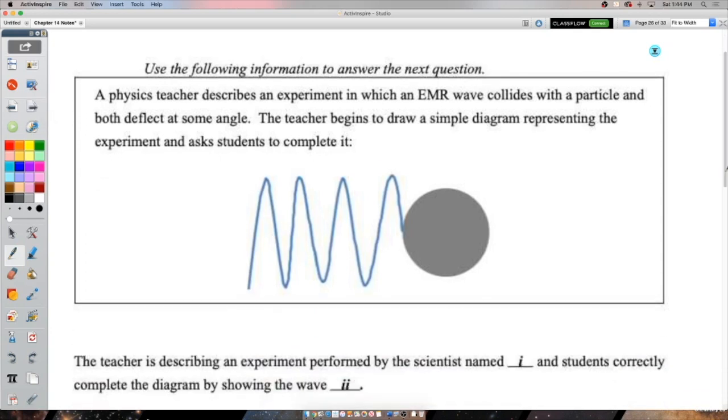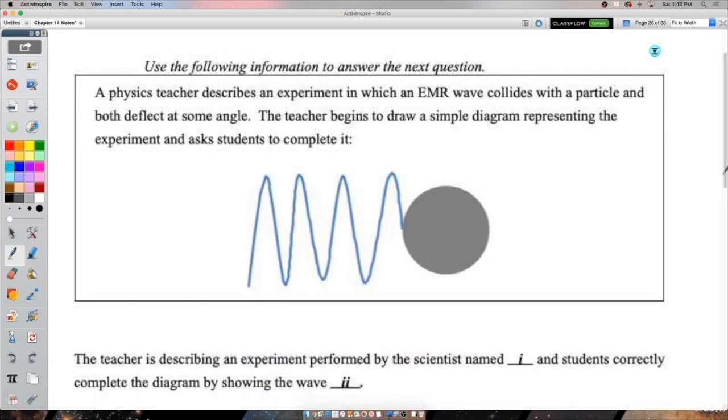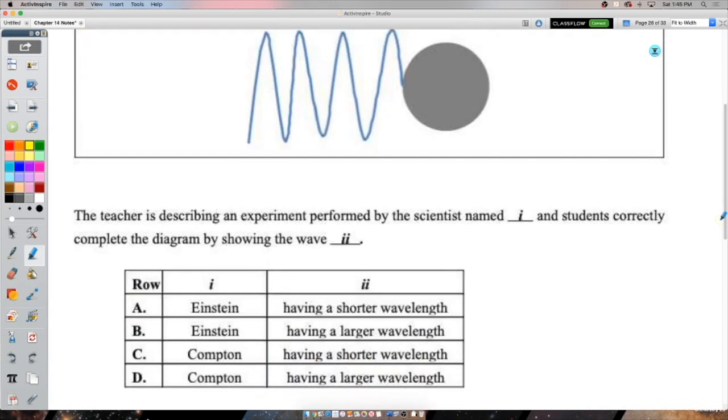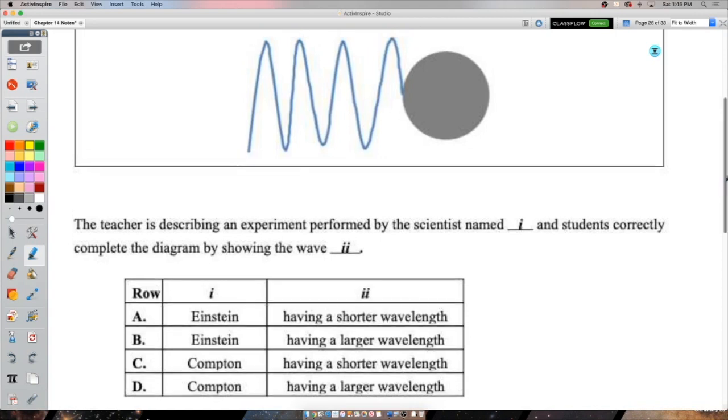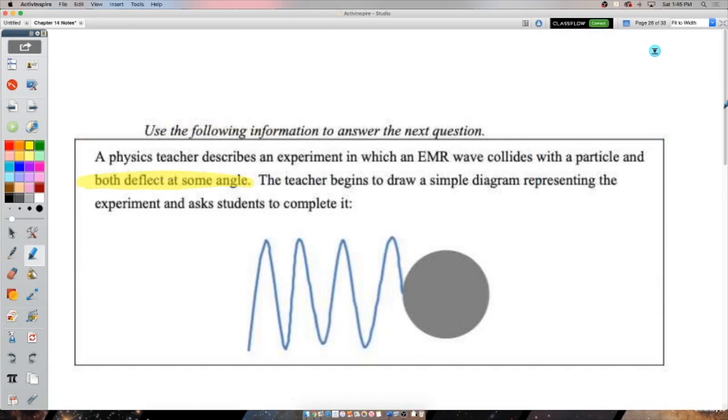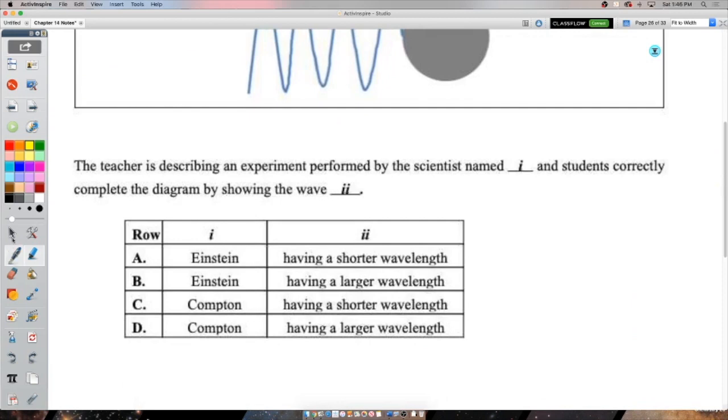A physics teacher describes an experiment in which an electromagnetic radiation wave collides with a particle and both deflect at some angle. Both deflect at some angle. The teacher begins to draw a simple diagram representing the experiment and asks students to complete it. This is the start of a diagram. We can see there, the wave has come in and it has made contact with the particle. So first things first, the teacher is describing an experiment performed by the scientist named blank. So either Einstein or Compton. So Einstein, photoelectric effect. Compton, Compton scattering. What's the difference? What's one of the big differences there? Well, in the photoelectric effect, the photon is completely absorbed. It's destroyed and its energy goes into kinetic energy of the electron and used up by the work function to even get the electron to come out in the first place. Is that what's happening here? No, both deflect at some angle. That's characteristic of the Compton effect, where the photon continues to exist, albeit with a longer wavelength, but it continues to exist and propagate. And the electron just bounces off at some other angle to conserve momentum. So definitely, this is describing the Compton effect.